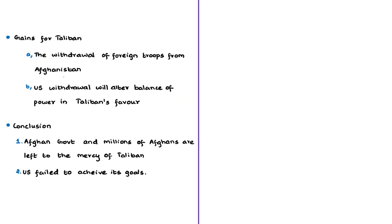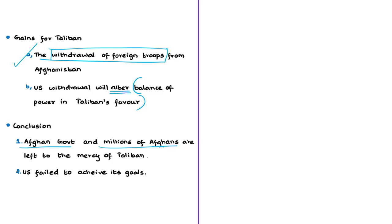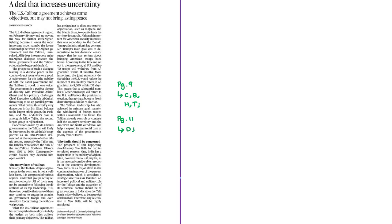The Taliban hailed the deal as successful since it leads to withdrawal of foreign troops. However, the Afghan government was heavily dependent on US troops, so their withdrawal will significantly alter the balance of power in favour of the Taliban. The US, in a desperate bid to exit the Afghan war, has practically abandoned the Afghan government and millions of Afghan people who oppose Taliban's rule. The two goals with which US troops entered Afghanistan — defeating terrorists and stabilizing the country — have not been fulfilled.